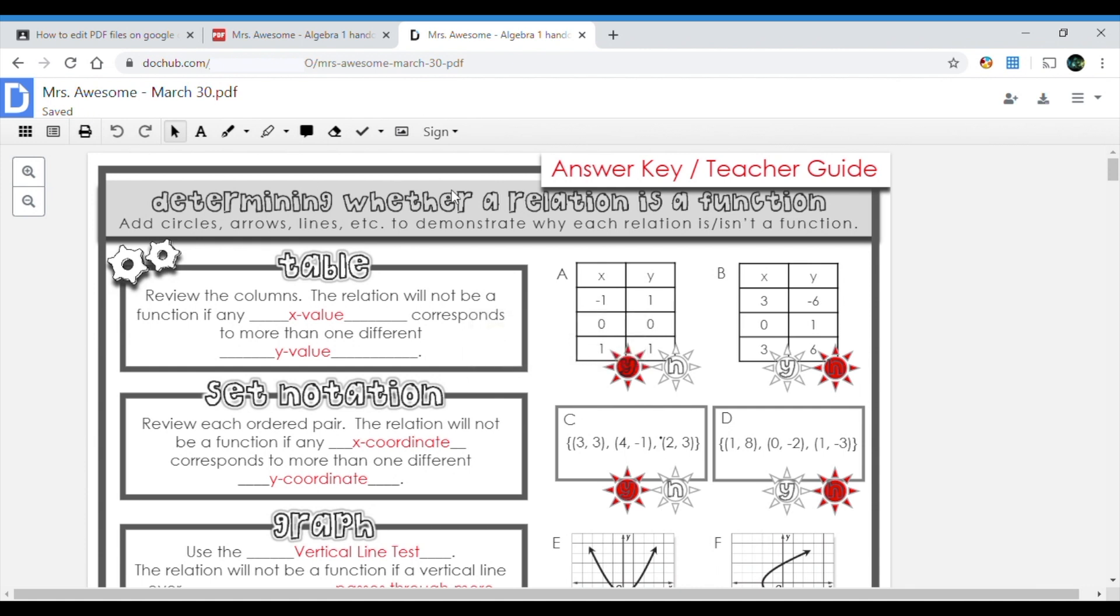Now we're gonna go ahead and look at the tools right here. These are all my tools. This is the undo, the redo, the pointer, the text, the drawing, the highlighting, the comment, the whiteout, and so on and so forth.